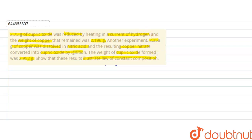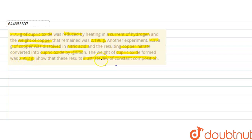In this question we are given that 2.75 grams of cupric oxide was reduced by heating in presence of a current of hydrogen, and the weight of copper that remained was 2.196 grams. In another experiment, 2.358 grams of copper was dissolved in nitric acid and the resulting copper nitrate, when ignited, formed cupric oxide of weight 2.952 grams. We have to illustrate the law of constant composition.